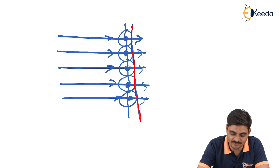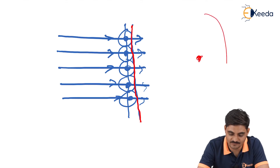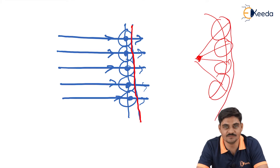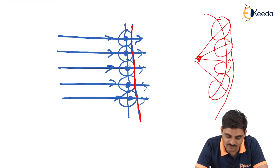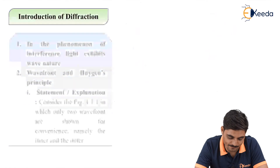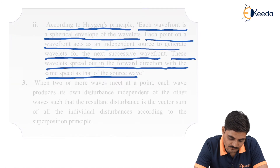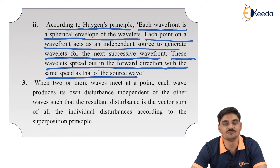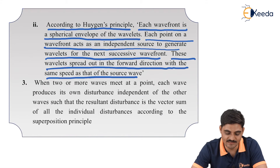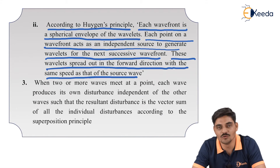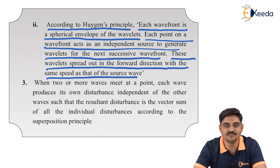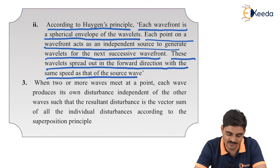For a spherical wavefront, similarly, each point generates wavelets. Drawing a tangent to these wavelets gives the next wavefront. To recap Huygens principle: each wavefront is a spherical envelope of wavelets, and each point on the wavefront acts as an independent source to generate wavelets for the next successive wavefront. To obtain that next wavefront, just draw a common tangent to all the wavelets.